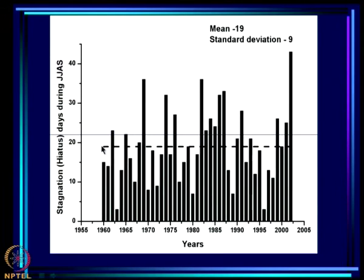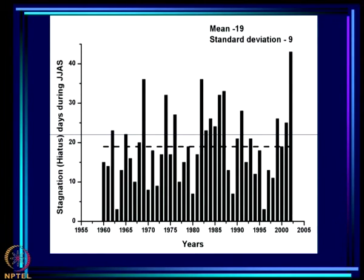Even in other years there is a lot of variation - some years like 1963 and 1996 had almost no stagnation. But typically there are about 10 days of stagnation, which is why the mean is around 20 days. The advance of the monsoon is not a steady progression from south to north and east to west; rather it occurs in bursts or spells, with hiatuses in between - having some hiatus is typical of the monsoon season.